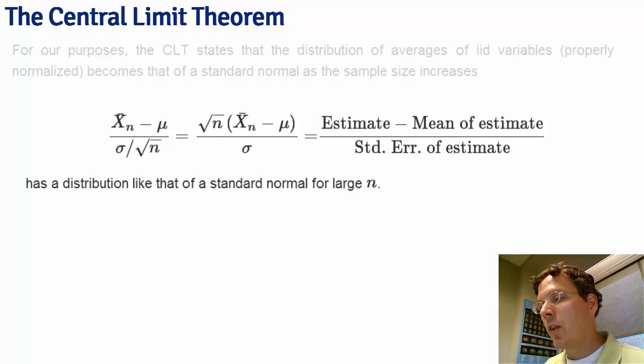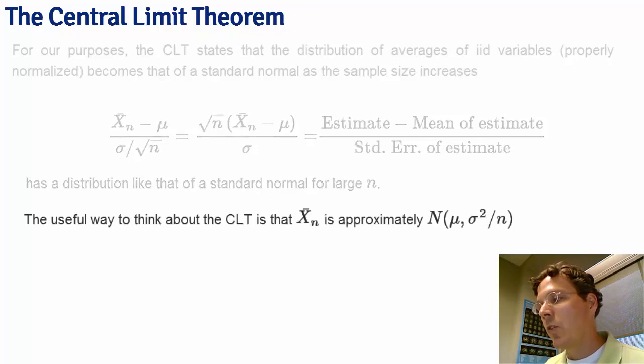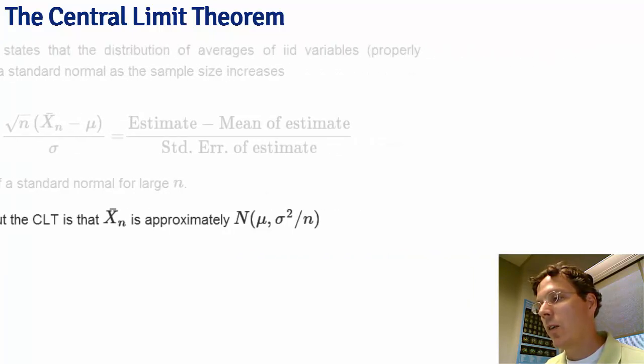I would also add that replacing the population standard deviation, which is unknown, by the sample standard deviation, which is known, does not change the central limit theorem. The most useful way we think about the central limit theorem is to say that the sample average is approximately normally distributed with a mean given by the population mean and a variance given by the standard error of the mean.